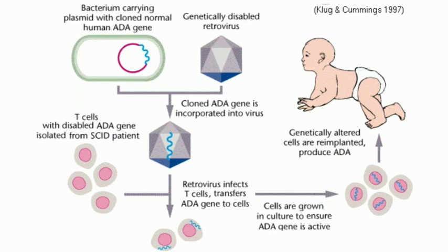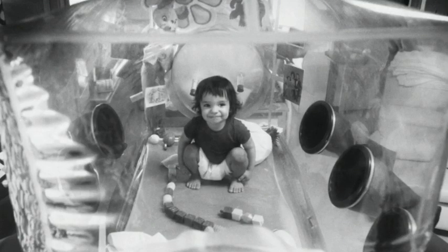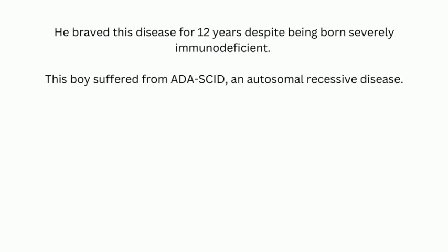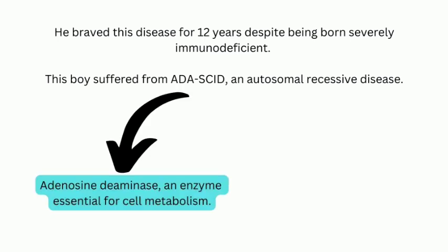This condition is usually fatal unless a hematopoietic stem cell transplant or gene therapy is carried out in time. David Philip Vetter, who lived only from September 1971 to February 1984, was a classic example of SCID. He braved this disease for 12 years despite being born severely immunodeficient, suffering from ADA-SCID, an autosomal recessive disease.